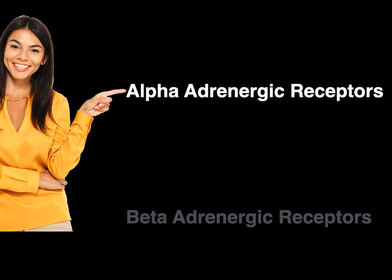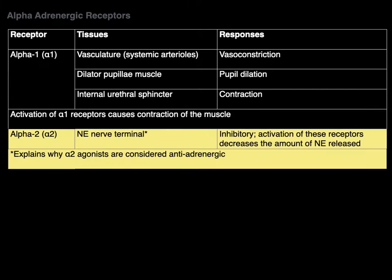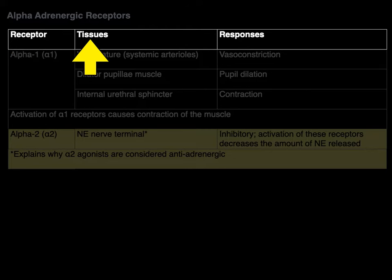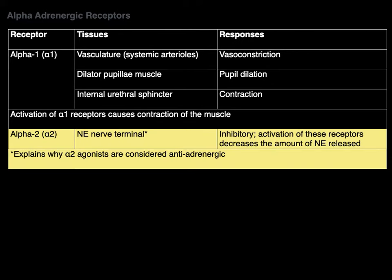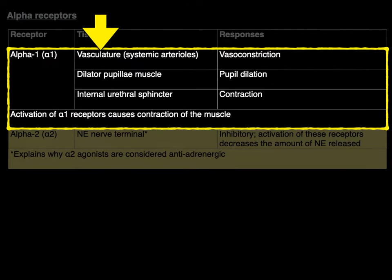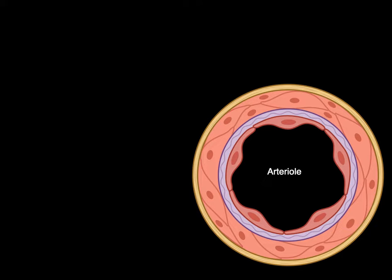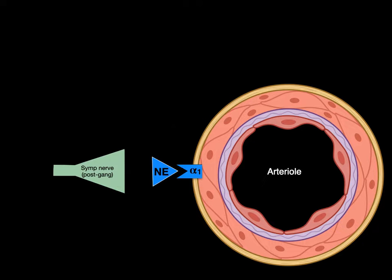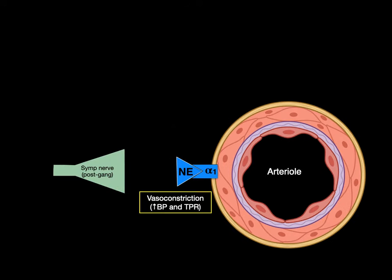Let's talk about alpha-adrenergic receptors, covering the receptor, the tissues where the receptors are found, and the responses when you stimulate those receptors. Starting with the alpha-1 adrenergic receptor on systemic arterioles causing vasoconstriction — here is a systemic arteriole in cross-section with the tunica media and smooth muscle in the middle layer. That smooth muscle contains alpha-1 adrenergic receptors, so when norepinephrine binds to that receptor, you get vasoconstriction, resulting in an increase of blood pressure and total peripheral resistance.